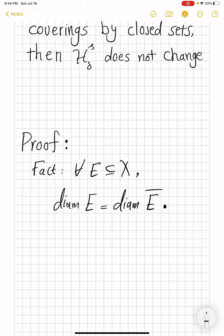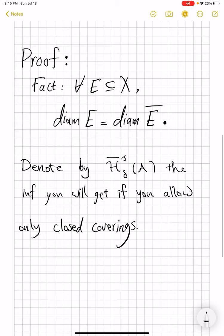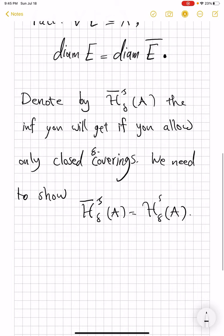Now let's see how this helps us prove the lemma. So let's denote by H̄^s_δ of A the quantity, the infimum you get, if you allow only closed coverings. So I'm also introducing more terminology as I go. By closed covering, obviously I mean a delta covering with closed sets. We need to show that this H̄^s_δ of A equals H^s_δ of A.